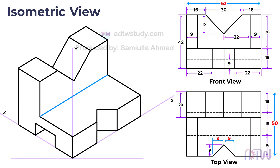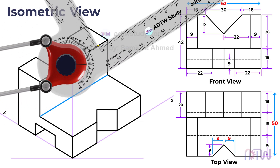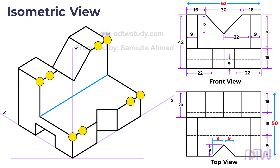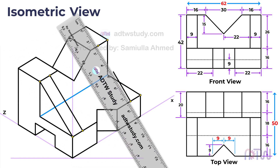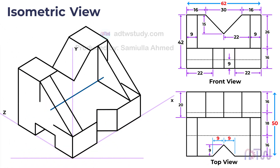This completes the vertical portion of the object. Next we need to draw the two end walls. The thickness of these walls is 9 millimeters. Mark points 9 millimeters away from both sides of the object on the vertical portion. Similarly, mark points 9 millimeters away from the ends of the base. Finally, join these points with lines to complete the side inclined walls.